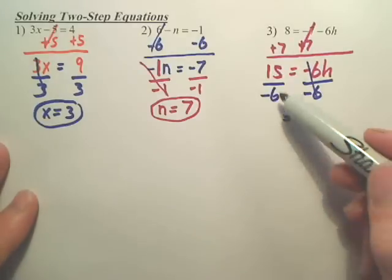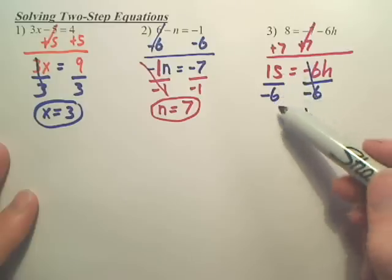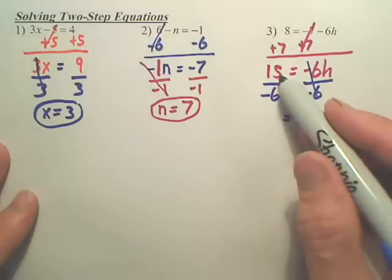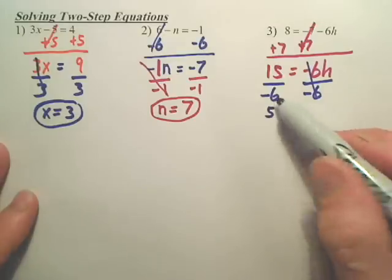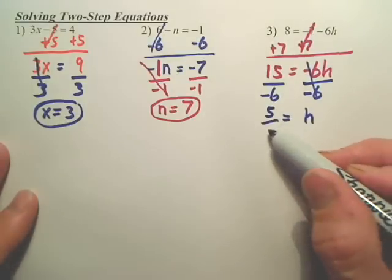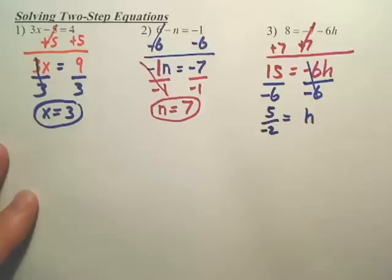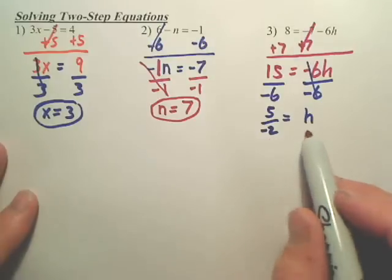Now, can we reduce 15 over negative 6? Yes. 3 goes into both those. 3 goes into 15 five times. 3 goes into 6 two times. Now, I don't like my answers. I like my h on the left side. So do you understand I could just flip-flop these?